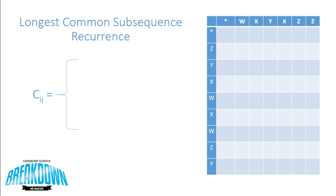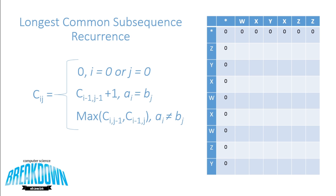There's a row and a column denoted with an asterisk in the table, which represents extra space filled with zeros. So when I equals zero or J equals zero, we fill the table with zero. The next rule is C at I minus one and J minus one plus one, applied when A at I equals B of J — meaning we've found common characters to include in the LCS. The final rule is applied when A at I is not equal to B of J: we take the maximum of C at I and J minus one, which is the space to the left, or C at I minus one and J, which is the space above.